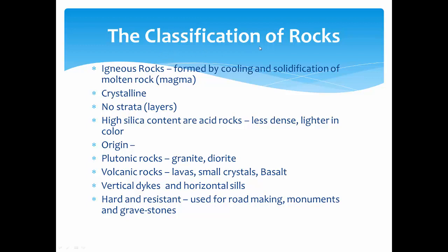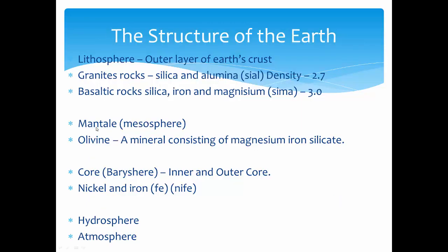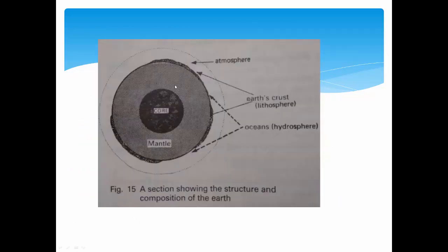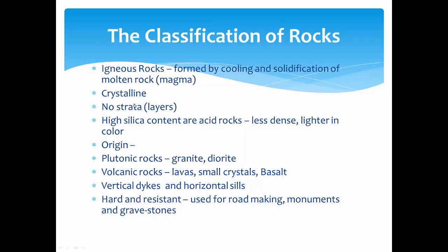The classification of rocks: there are three types. First is igneous rocks, formed by cooling and solidification of molten rocks — magma. This magma comes from volcanic eruptions or any fissure in the Earth's crust. Magma is the molten lava formed in the mantle of the Earth. It comes to the Earth's surface to form igneous rocks. Igneous rocks are crystalline in nature, they don't have layers or strata, and they have high silicon content.